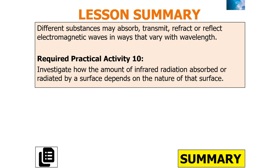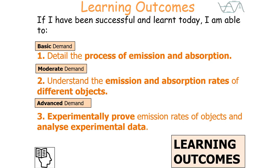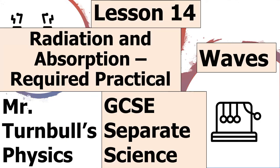In this required practical activity — required practical 10 — we've investigated how the amount of infrared radiation absorbed or radiated by a surface depends on the nature of that surface. If we've been successful, we can detail the process of emission and absorption, understand the emission and absorption rates of different objects, and experimentally prove emission rates of objects and analyse experimental data. I hope you've enjoyed today's lesson on the radiation and absorption required practical, part of the GCSE physics Waves topic in separate science. Thank you very much for watching, and have a lovely day.